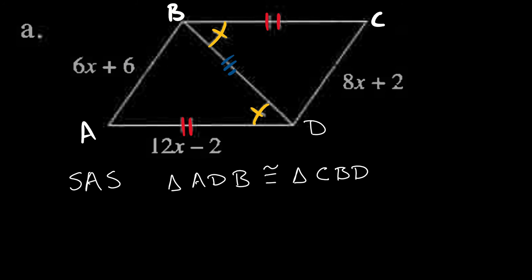Now I've got all these things marked with expressions containing x. Let me identify corresponding parts. In the first triangle I have segment AD, and in the other triangle I have segment CB. Those are marked congruent in red, but that doesn't help with x. Let's look at another pair.